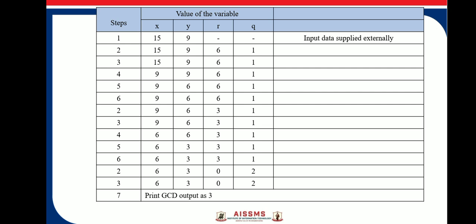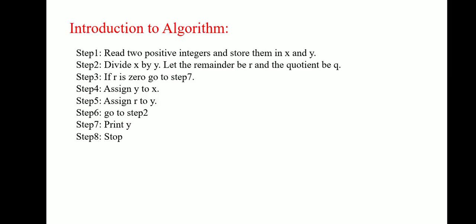15 divided by 9, remainder is 6 and quotient is 1. Step 3 is, we will check whether R is 0 or not. Step 3 is, if R is 0, go to step 7.